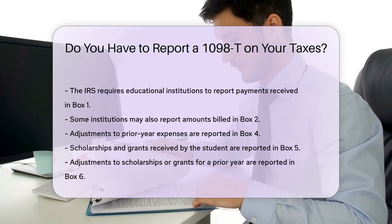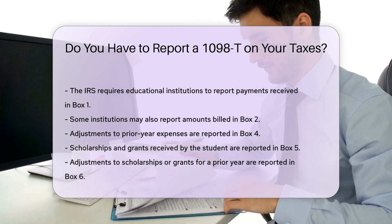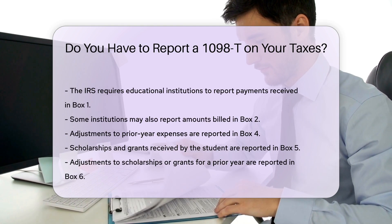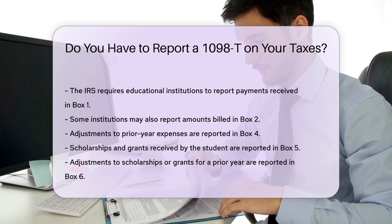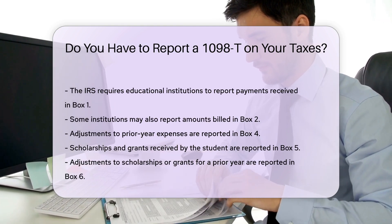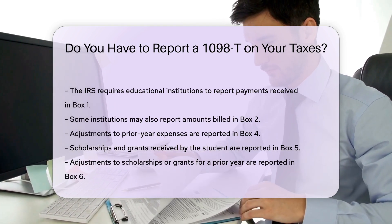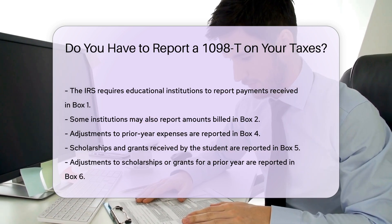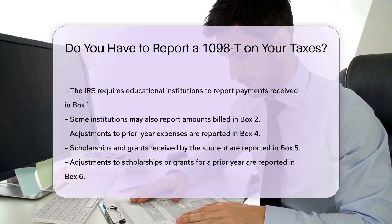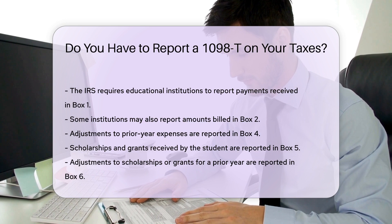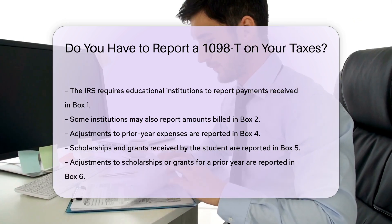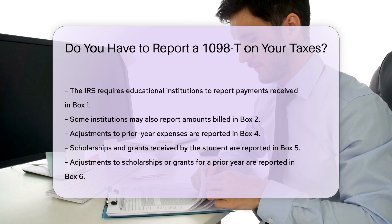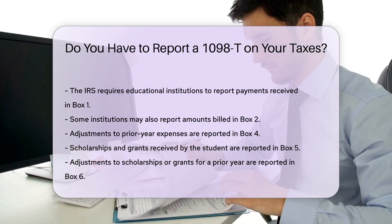The 1098-T form may also include adjustments to prior year expenses, which are reported in Box 4. Scholarships and grants received by the student are reported in Box 5. Adjustments to scholarships or grants for a prior year are reported in Box 6. If the educational institution refunds amounts paid for qualified expenses, these refunds are reported in Box 7.